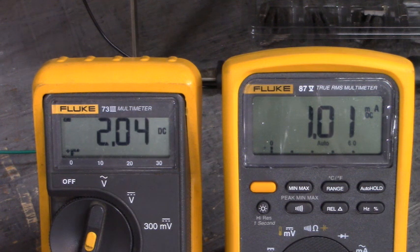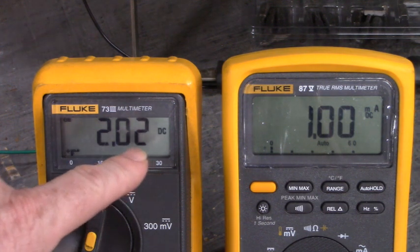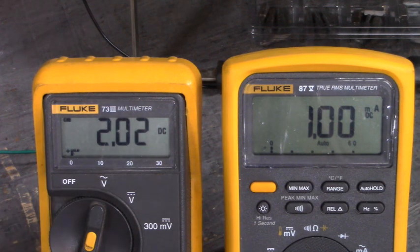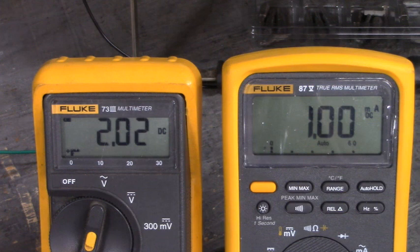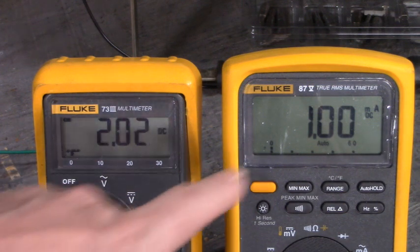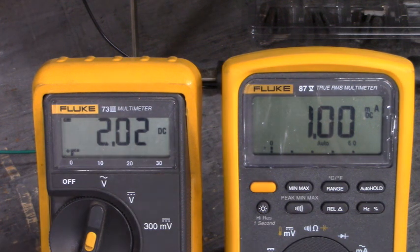Let me crank that up a little bit. I'm cranking the variac dial up just a little bit. We got 2.02 amps flowing through the load and we have 1 milliamp out here. That's 2 divided by 2,000 equals 1 milliamp. Isn't that amazing. So that current sense module is good.